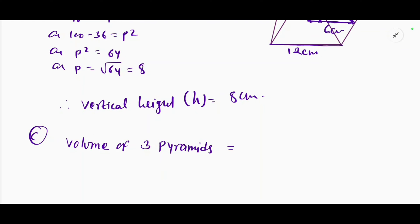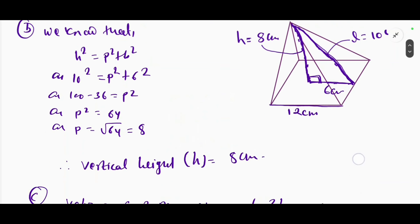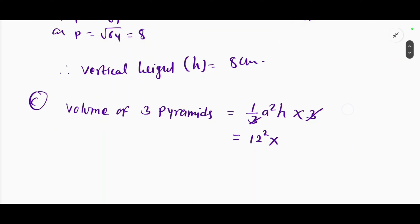The volume is equal to 1/3 times A-squared times h. To find the volume of one pyramid, we use this formula. We need to find the base and the vertical height values before calculating.